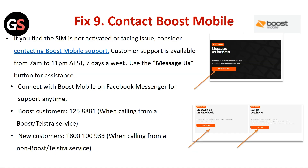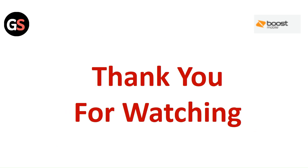Fix Nine: Contact Boost Mobile. If you find your SIM is not activated or you are facing an issue, consider contacting Boost Mobile Support. Customer support is available from 7 AM to 11 PM, 7 days a week. Use the Messages button for assistance. You can also connect with Boost Mobile on Facebook Messenger for support anytime, or call Boost Mobile customer service.